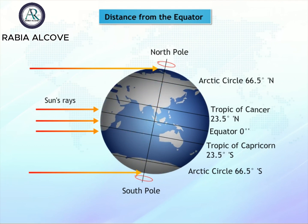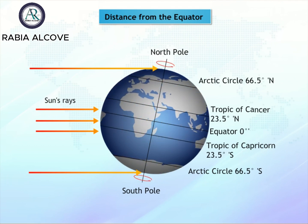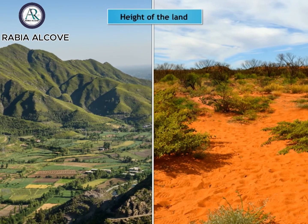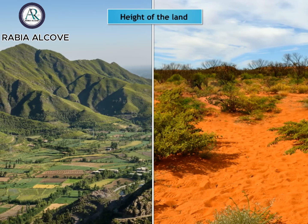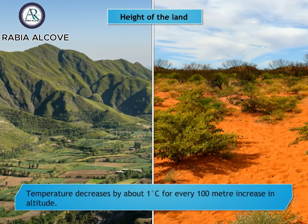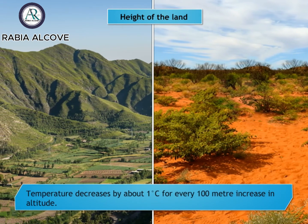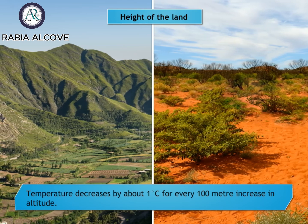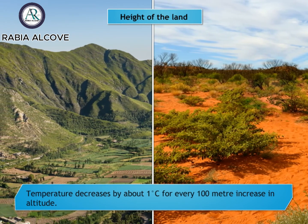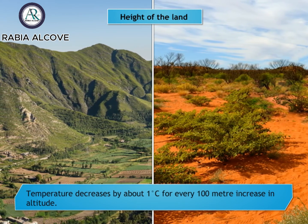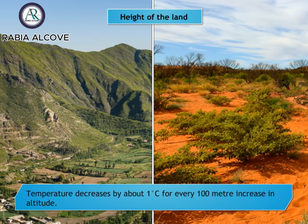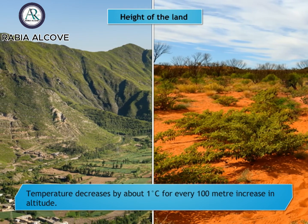Places located at a higher altitude have colder temperatures. Temperature decreases by about one degree Celsius for every 100 meter increase in altitude. So even if two places are on the same latitude, the one which is at higher altitude will have a cooler temperature than the one at lower altitude.